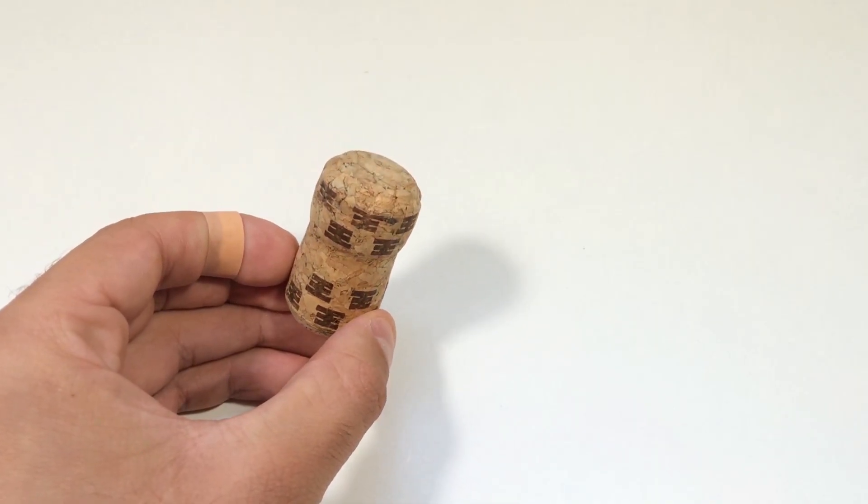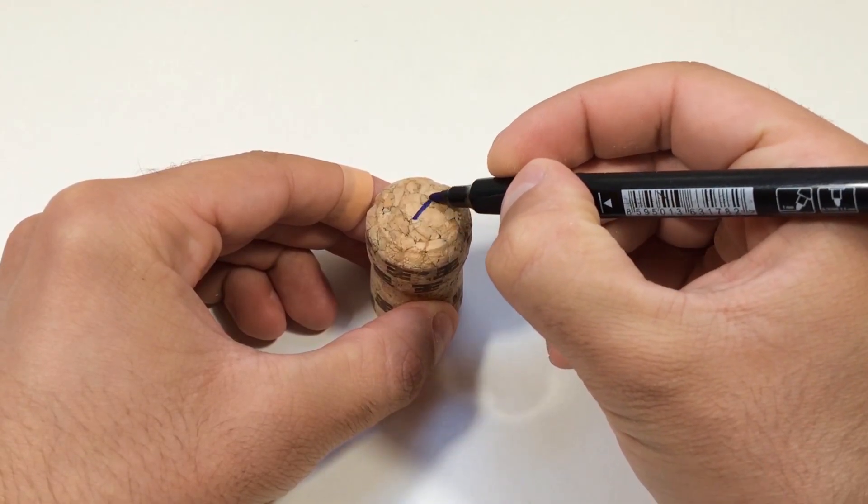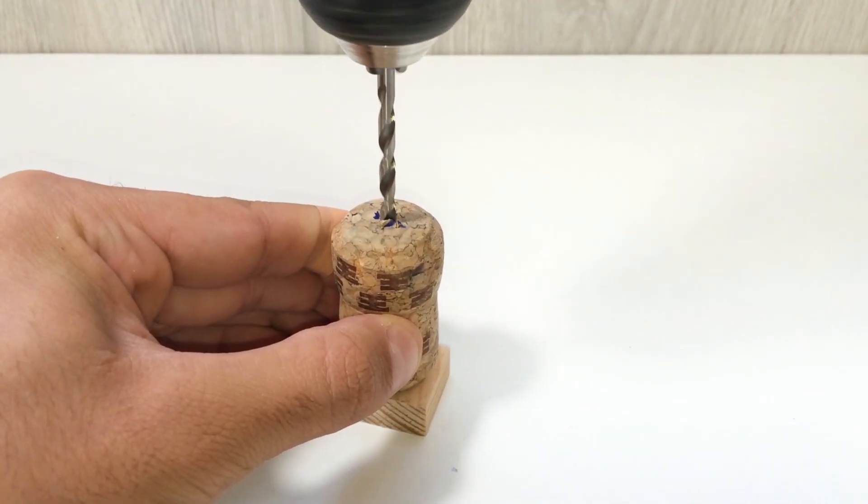First, take the wine cork and drill a small hole straight through the center. The knitting needle should fit smoothly through it. This will be our axle.